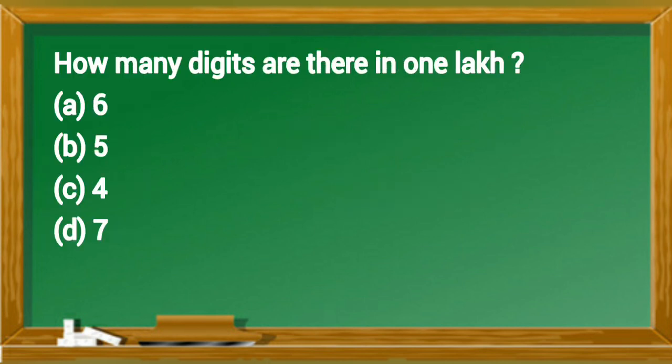How many digits are there in 1 lakh? 1 lakh can be written as 1-0-0-0-0-0. So there are 6 digits in 1 lakh. Option A is the correct answer.